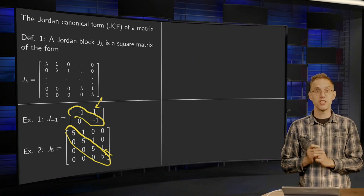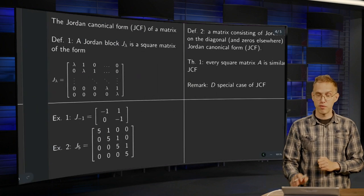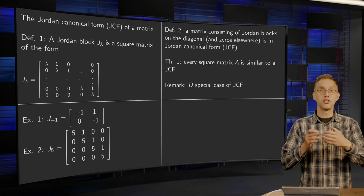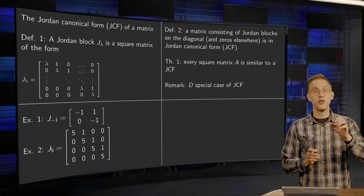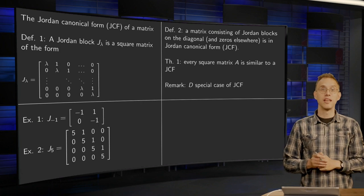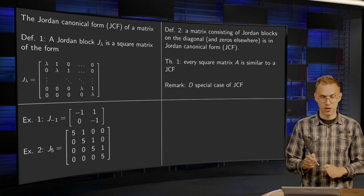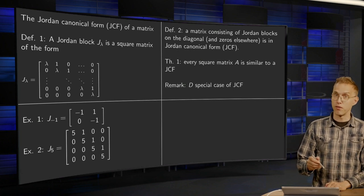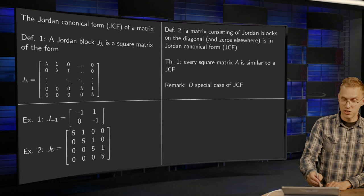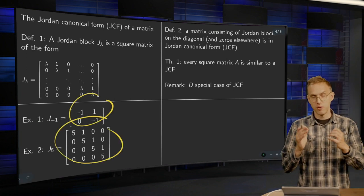Now we know what a Jordan block is, and then we can define what the Jordan canonical form of a matrix is. That is a matrix which just contains a number of Jordan blocks—Jordan block, Jordan block, Jordan block. That is the idea: Jordan blocks on the diagonal, and apart from that, everywhere zeros. So the Jordan canonical form of a matrix contains all blocks of these forms. That is the idea.